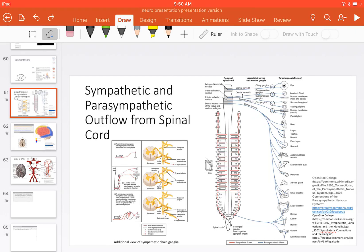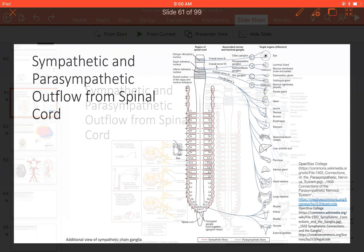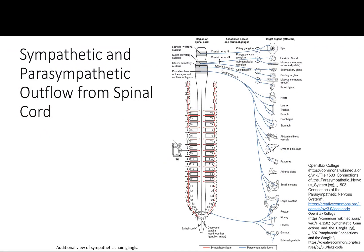I want to briefly talk about sympathetic and parasympathetic outflow from the spinal canal. This is not very important, especially not for Step 1 purposes, but it's important for your overall understanding of the nervous system.